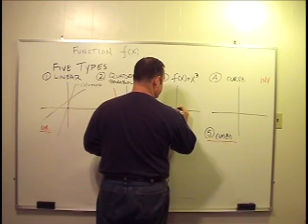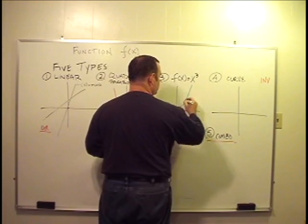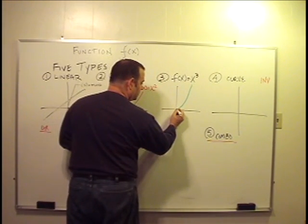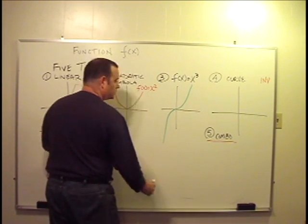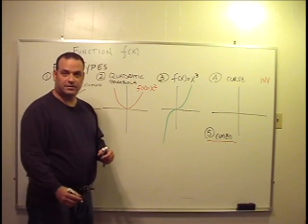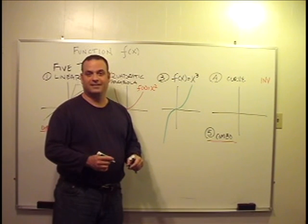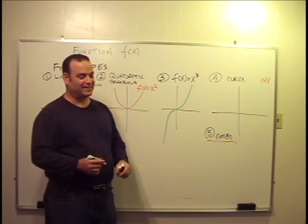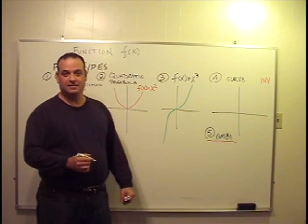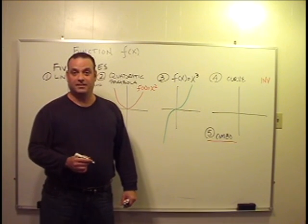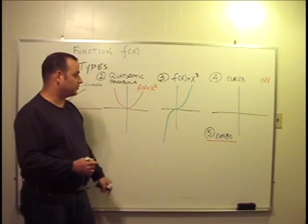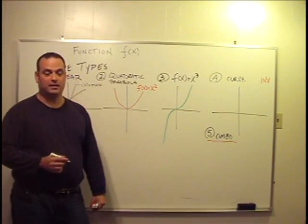And when f of x is raised to the third power, it resembles a parabola, but it goes over this way. So when f of x is equal to x raised to some exponent that's odd and greater than or equal to three, this is the shape of the graph.